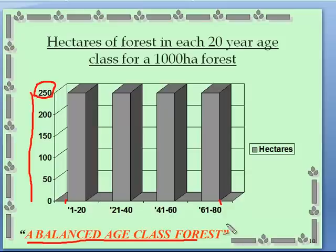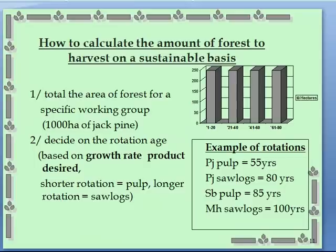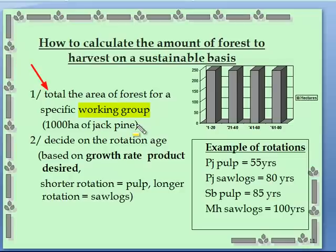When you hear the term normalization it means a forest which has equal age classes across the entire age span. To calculate the amount of forest to harvest, you need to find the total area of the forest for a specific working group. A working group implies a certain species and how you will manage it — for example, a poplar working group is managed differently than a black spruce working group. It is a term used in Ontario.